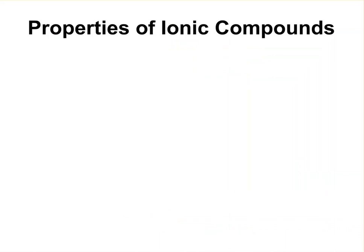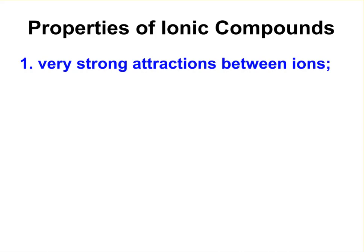And lastly, let's talk about the properties of ionic compounds. These properties mainly come from the fact that ionic compounds have very strong attractions between them. And these attractions, they're not as strong as like within a covalent bond, but they are very strong and they hold things together into the solid.